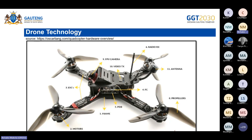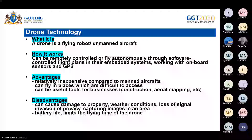The next concept is drone technology. A drone is a flying robot or an unmanned aircraft. It can be remotely controlled or fly autonomously through software-controlled flight plans embedded in its system, working with onboard sensors and GPS. You can relate to this concept because last year your PAT project was based on drone technology.